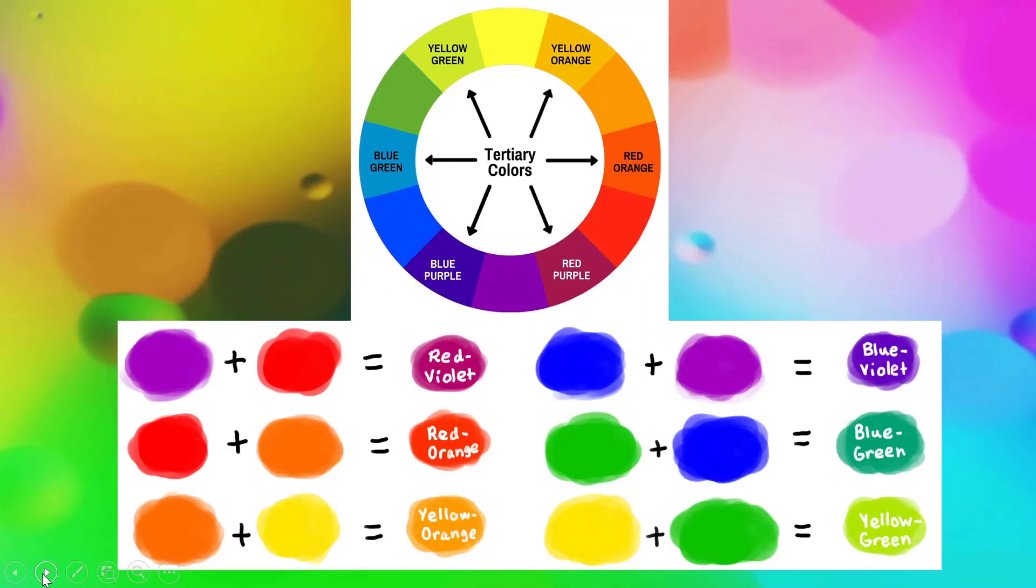Now the tertiary colors are made when you take a primary color and you mix it with a secondary color. When we add in all the tertiary colors, the color wheel has six more colors. That's pretty cool.